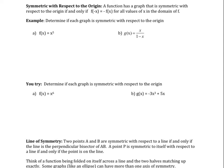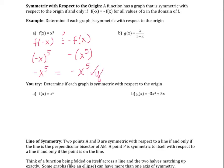Symmetric with respect to the origin: a function has a graph symmetric with respect to the origin if and only if f(−x) equals −f(x) for all values of x in the domain of f. Without graphing, we can determine this. For f(x) = x⁵: f(−x) = (−x)⁵ = −x⁵, since an odd power of a negative is negative. And −f(x) = −x⁵. So f(−x) does equal −f(x), meaning this function is symmetric with respect to the origin.